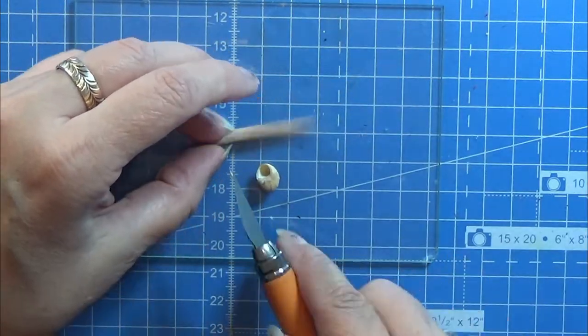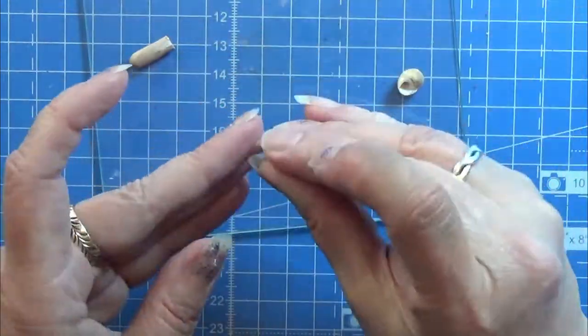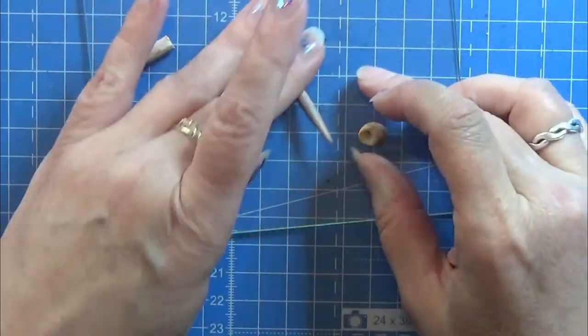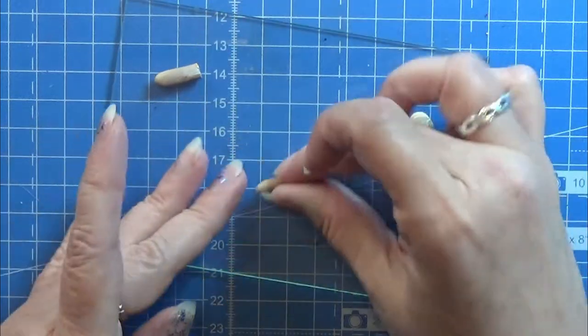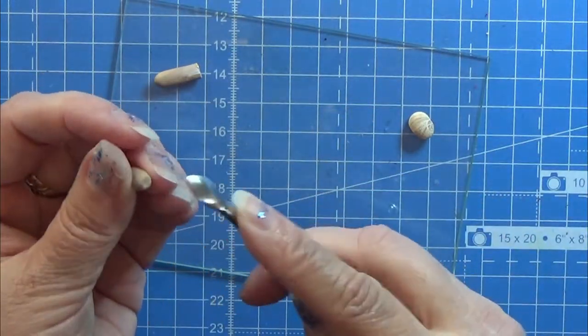I'm measuring out where I want the little snail house and then I'm just cutting it off in the length that I like and I'm making the end here nice and round so that it doesn't have this cut look to it.